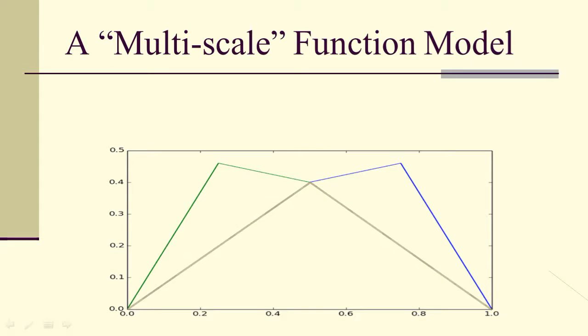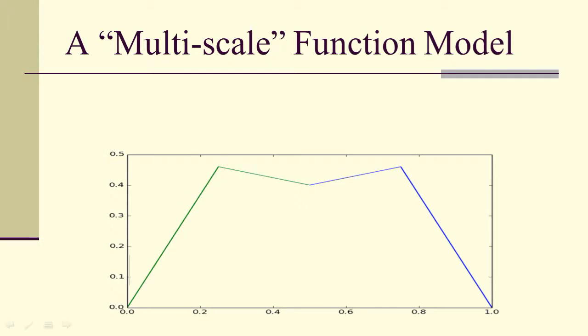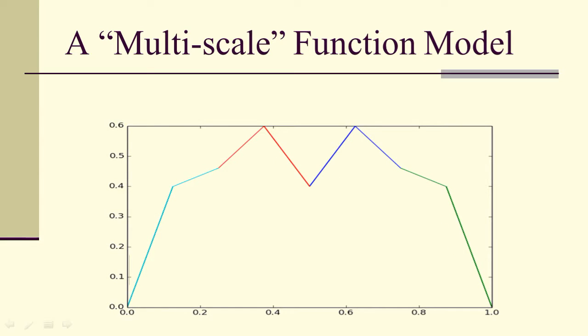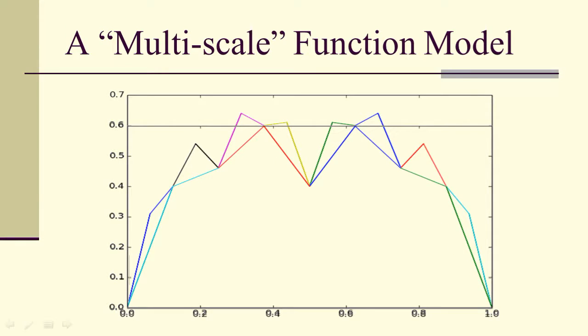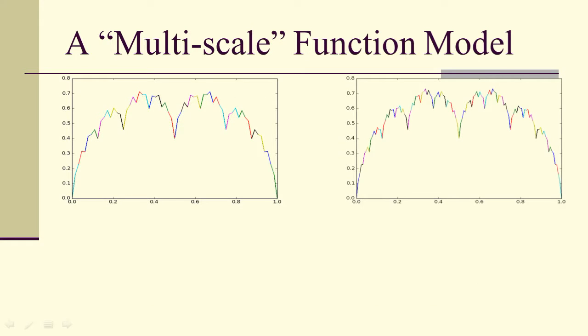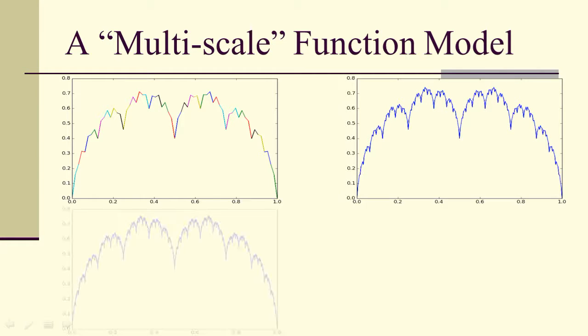We're also going to maintain symmetry about x equals one half. Let's start with an absolute value-looking function, a tent. Let's take each of the two linear segments, and use the template, and replace the segments by the cusp that's inside of the parallelogram. Therefore, now we have four linear segments. Let's do the same thing with each one of them, using the parallelogram template.